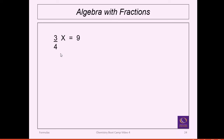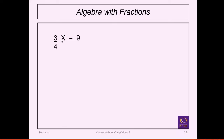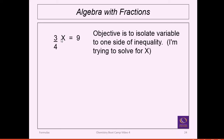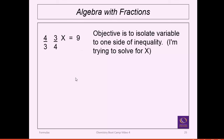Algebra with fractions: fractions really mean divide, so 3x divided by 4 is the same as three-quarters times x. To get x by itself, it's being multiplied by a fraction — so the opposite is dividing by that fraction, which means invert and multiply. Dividing both sides by 3/4 cancels the fraction on the left, and on the right you have 9 divided by (3/4) — invert and multiply to get 9 times 4 divided by 3, which equals 12.